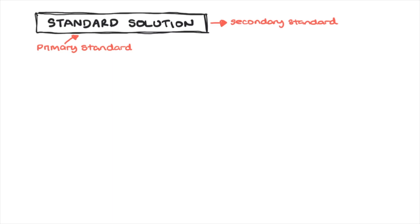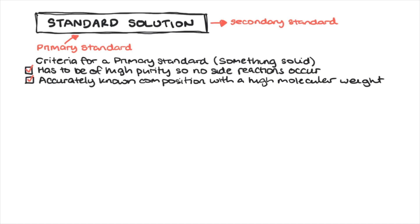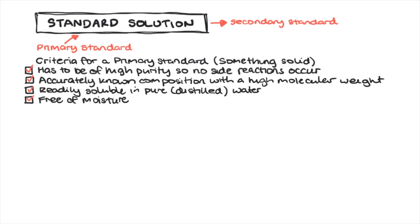There are a few criteria that the primary standards must satisfy. It has to be of high purity so no side reactions occur, with an accurately known composition and a high molecular weight — this is to reduce the percentage error in weighing. It also has to be readily soluble in pure distilled water and free of moisture.